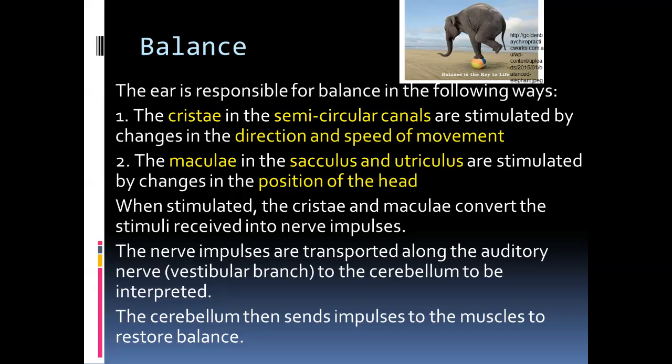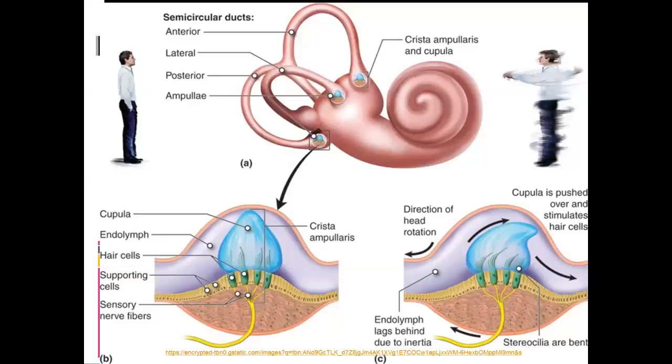To recap, the most important things to know in this section: the name of the receptors, the position of the receptors within the inner ear, and the stimuli picked up. Then state that these stimuli are converted into impulses going along the auditory nerve to the cerebellum, and then the cerebellum responding by impulses going via motor neurons to the muscles to restore balance. The detailed structure of the receptors is not required as per the examination guidelines, but we'll look at it in more detail for better understanding.